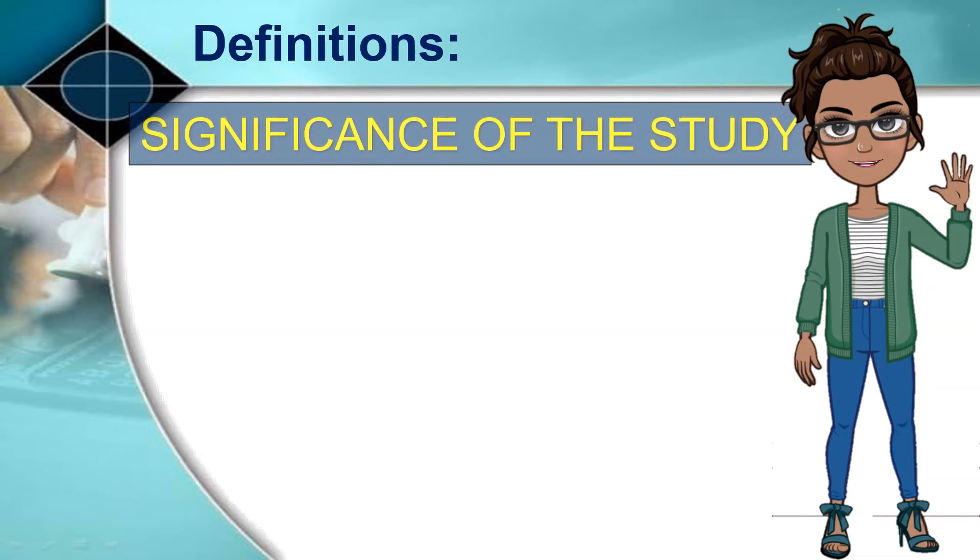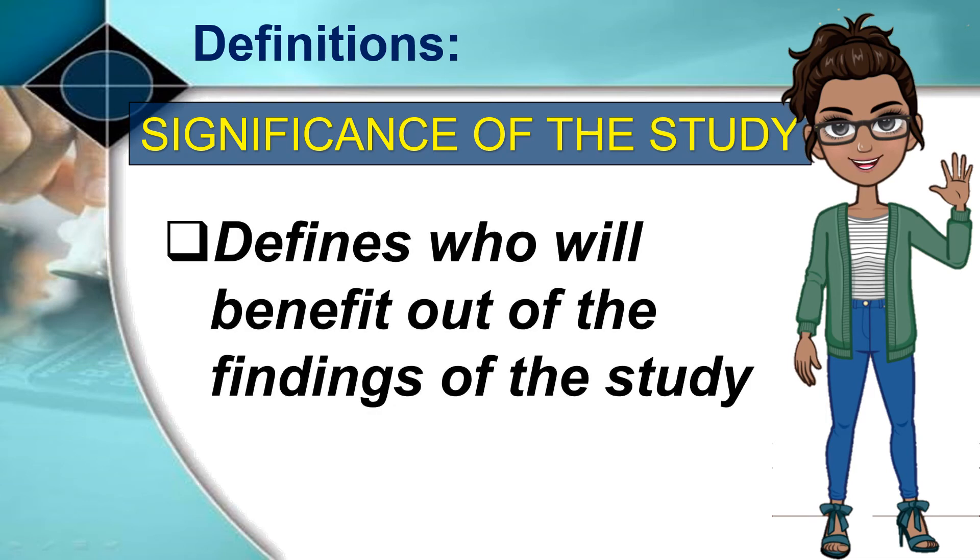Moving on, let's discuss the significance of the study. In this part of the research, the researcher defines who will benefit from the findings of the study. He or she describes how the problem will be solved and specifically pinpoints who will benefit from such findings or results.